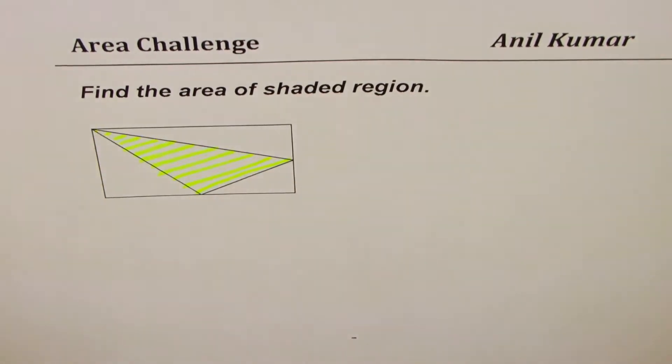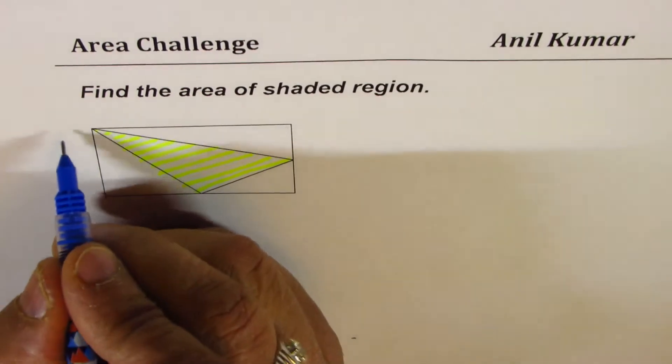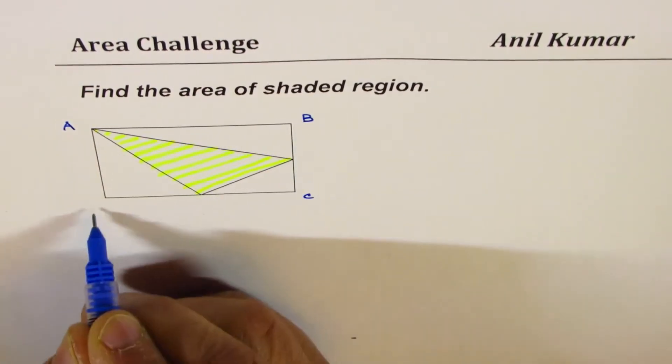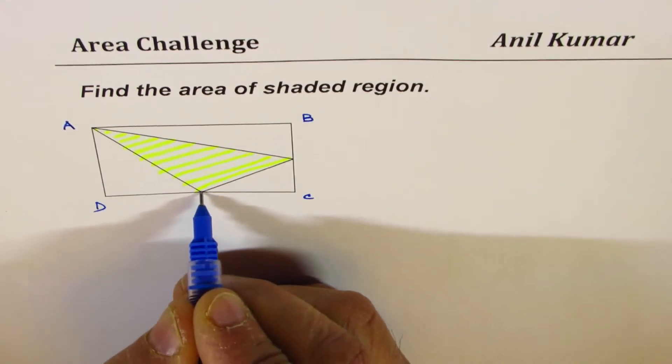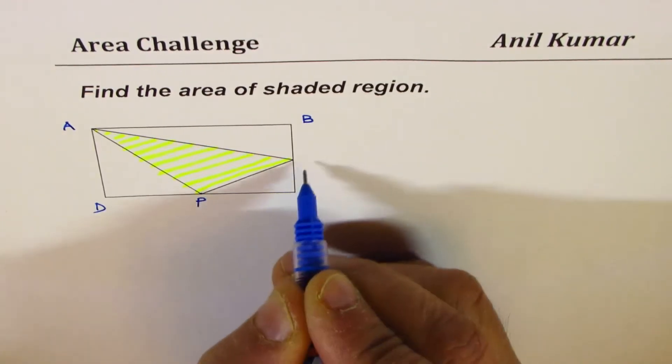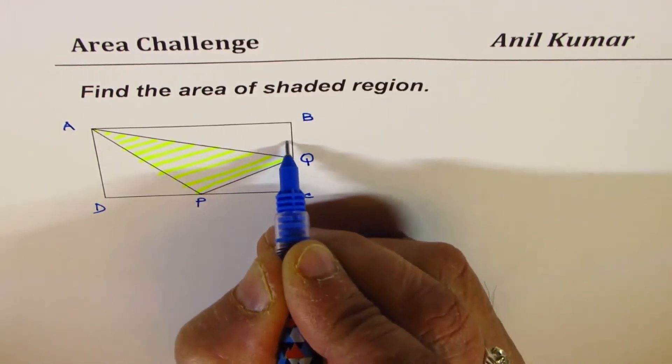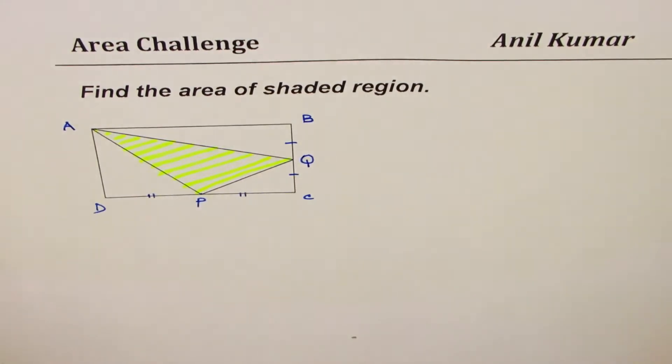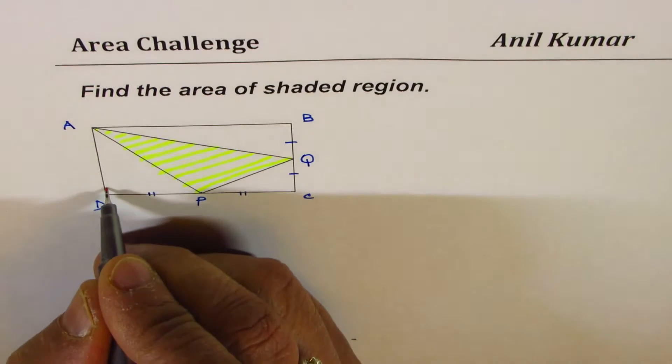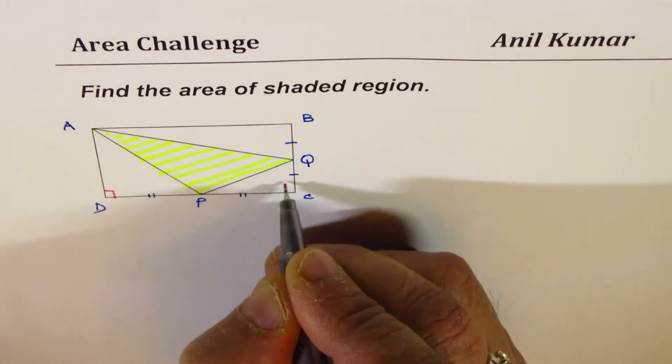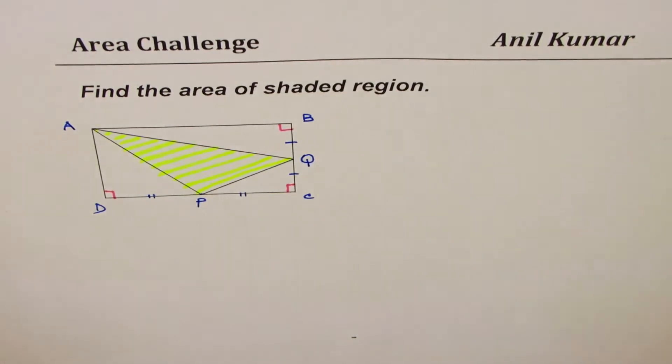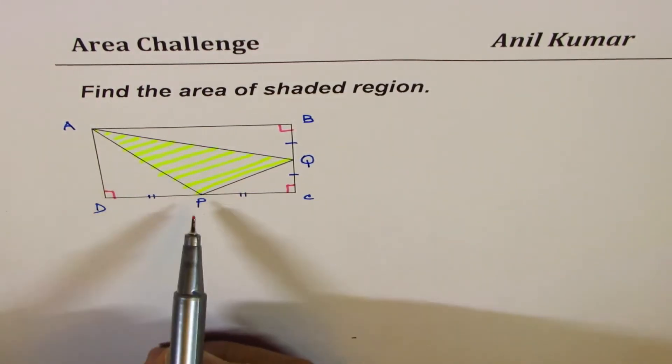Now let me label all this. We have a rectangle, say ABCD with midpoints. These are the midpoints, let's say P and Q. I mean to say these are the midpoints, and we're talking about a rectangle in which we have a triangle as shown.